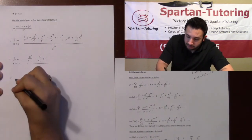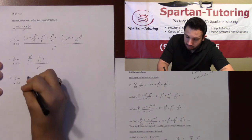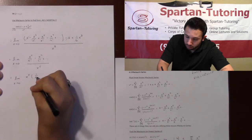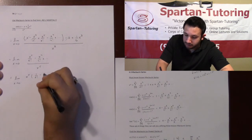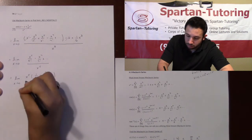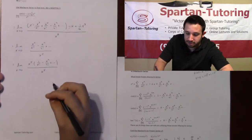Factoring x to the 5th out of everything, I'll have the limit as x approaches 0. When I factor out that x to the 5th, I'll have 1 over 5 factorial minus x squared over 7 factorial and so forth, all over x to the 5th. Now these x to the 5ths cancel.